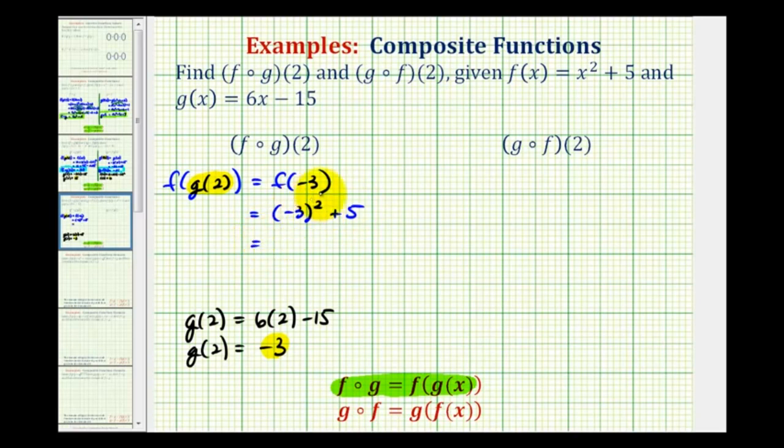Well, negative 3 squared—be careful here, we're squaring negative 3, which means negative 3 times negative 3. So this is positive 9 plus 5, which is equal to 14. So our composite function f of g of 2 is equal to 14.